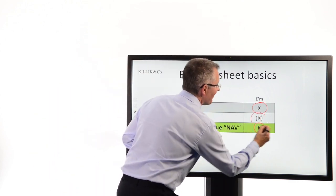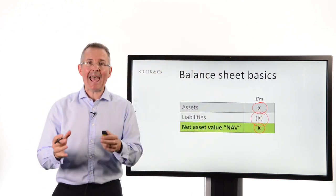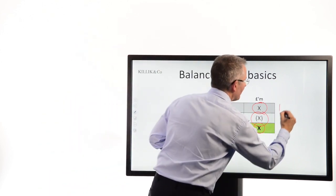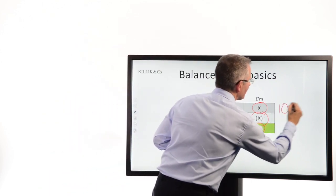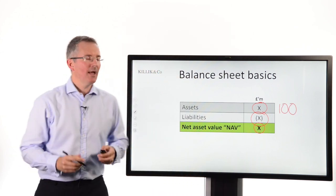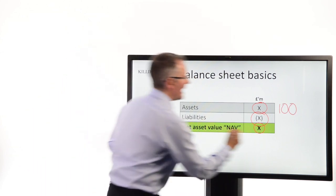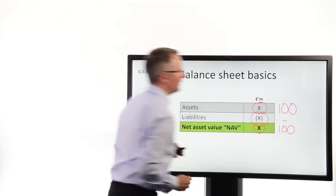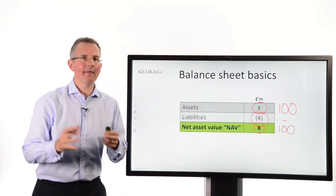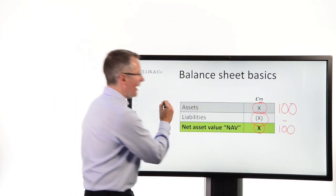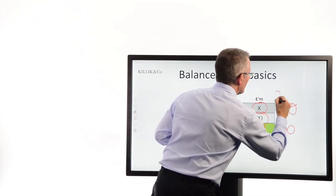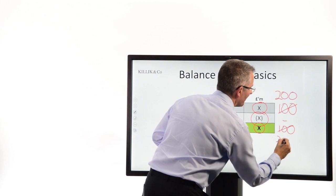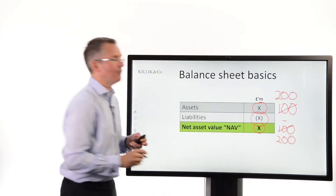Liabilities in a fund that's allowed to do it means debt or borrowing. It's a very simple example: if a fund's got assets of, say, 100 million and no liabilities, its NAV is 100 million. If assets double to 200 million, that will double the NAV, all other things being equal, to 200 million.